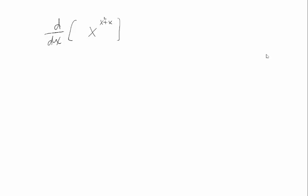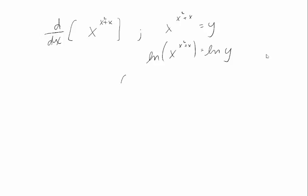The last thing we can do with logarithmic differentiation is differentiate a kind of function that we couldn't differentiate before: a function to a function. Suppose I want to differentiate this function. I don't know how to do it right now, but I can set it equal to y and take the log of both sides. Now I can simplify and differentiate implicitly. For the left-hand side, I take the first times the derivative of the second, plus the second times the derivative of the first. And for the right, I have to remember my chain rule. So now to find y prime, I just multiply both sides by y, which was x to the x squared plus x.